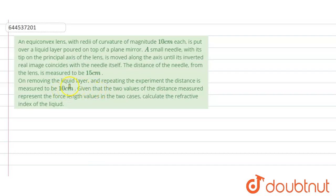That means when only the lens is placed and there is no liquid. Now we need to find, given the two values of the distance, the focal length values in the two cases. These values we need to use to calculate what is the value of the refractive index.